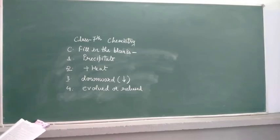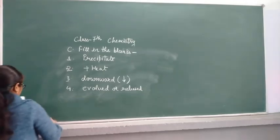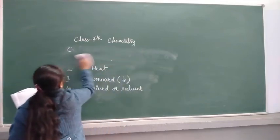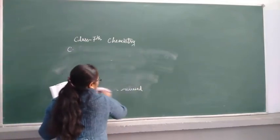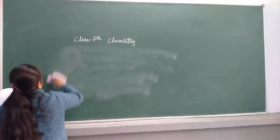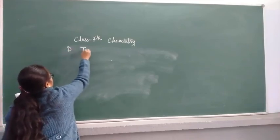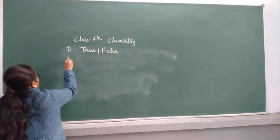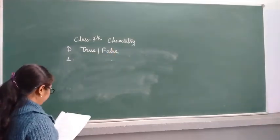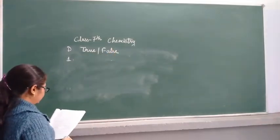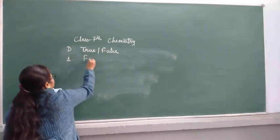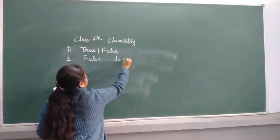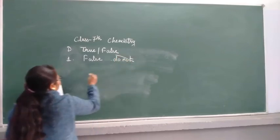Now the last one is true or false. Question number D, true or false. First one: Chemical reactions do not tell us about reactants or products. Here it is false. You have to cut do not.